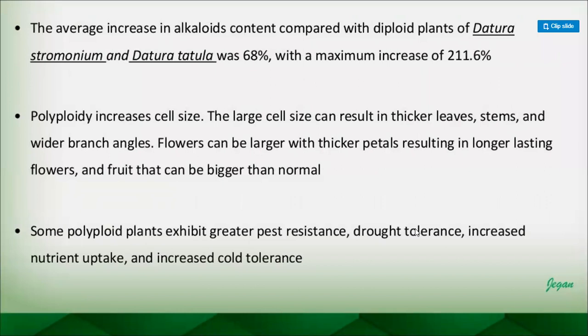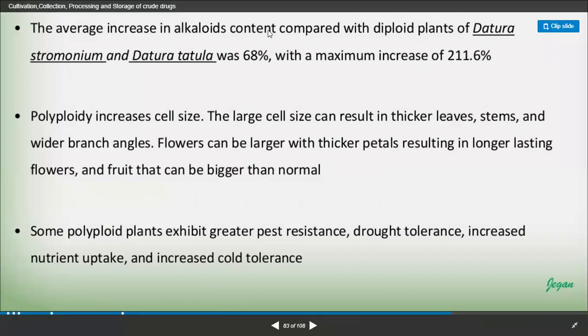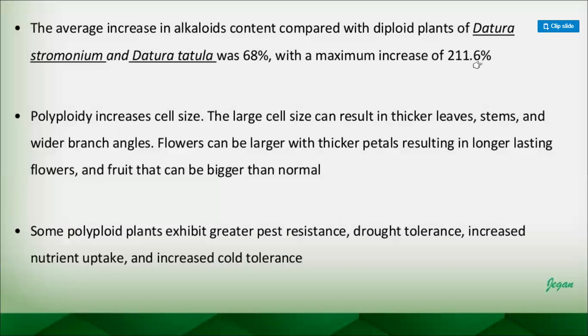The average increase of alkaloids compared with diploid plants in Datura stramonium and Datura tatula was 68 percent, with a maximum increase of 211.6 percent. This shows how cultivating Datura — an alkaloid-containing medicinal plant — using polyploidy techniques greatly increases the quantity of alkaloids obtained.